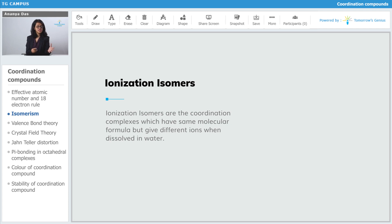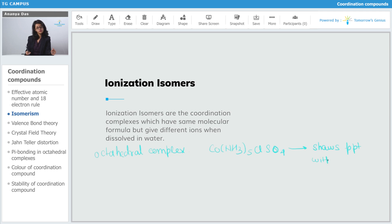Let us consider an octahedral complex which has a molecular formula containing 5 molecules of NH3, 1 chlorine and 1 SO4. This complex shows a precipitate with BaCl2 but does not show any precipitate with AgNO3.